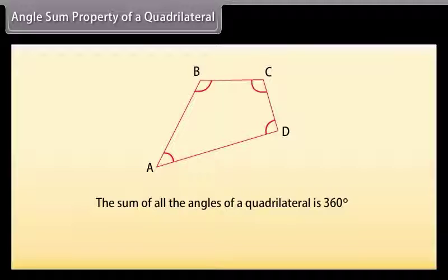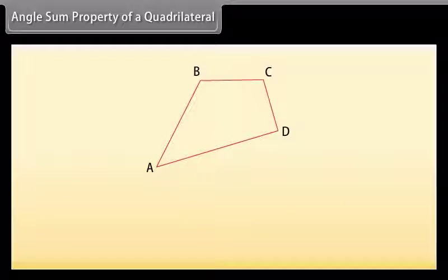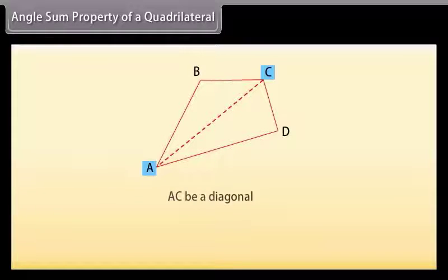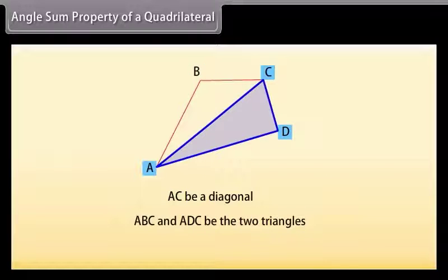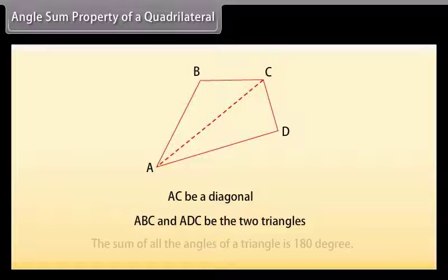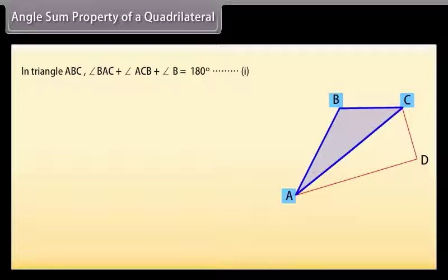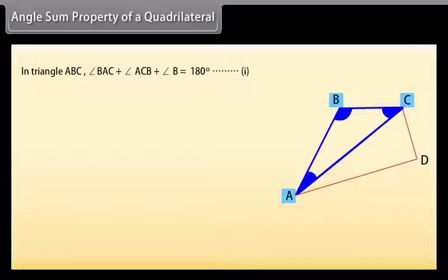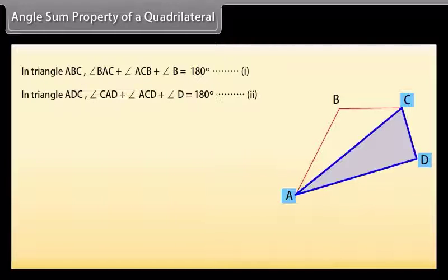Angle sum property of a quadrilateral: The sum of all the angles of a quadrilateral is 360 degrees. This is called the angle sum property. To find the sum, let's divide this quadrilateral into two triangles by drawing a diagonal. Let AC be a diagonal and ABC and ADC be the two triangles. We know that the sum of all the angles of a triangle is 180 degrees. Therefore, in triangle ABC: angle BAC + angle ACB + angle B = 180 degrees (mark it as 1).